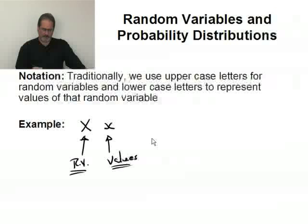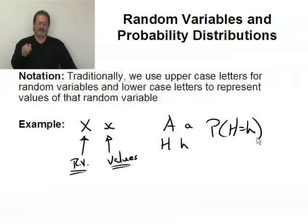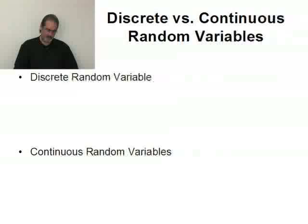Same thing for uppercase A, lowercase a. H's and h's, random variables versus values that it can take on. Now, this leads to probability statements such as the probability that H equals h. In English, that doesn't make much sense. In terms of statistical statement, it makes a lot of sense. Because this is saying, what's the probability that a random variable takes on or is actually equal to a very specific value, little h? So this has a very exact meaning.